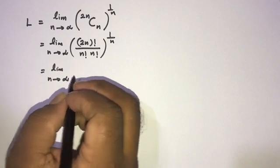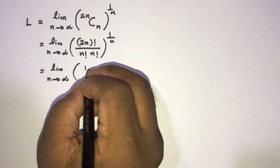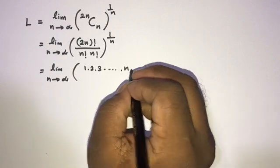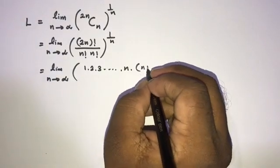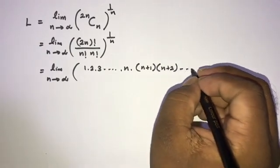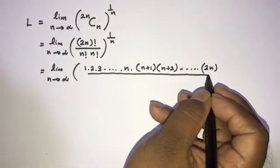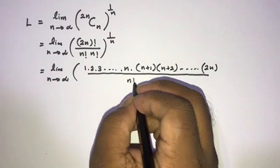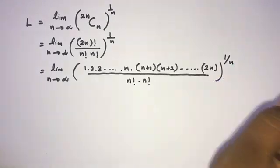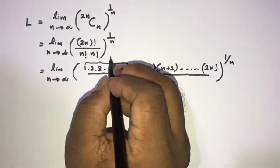Taking the limit as n approaches infinity, we can write 1, 2, 3, going up to n, and then n plus 1 times n plus 2 going up to 2n, over n factorial times n factorial, all to the power 1 over n.